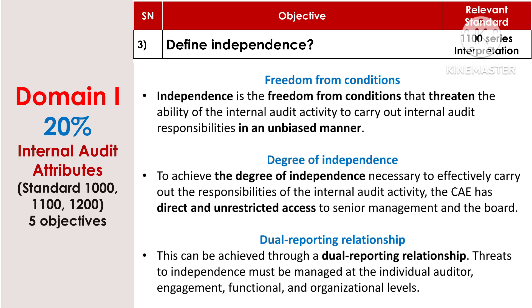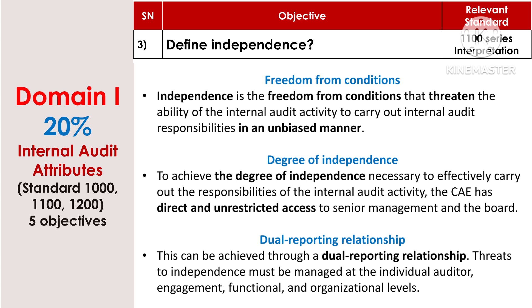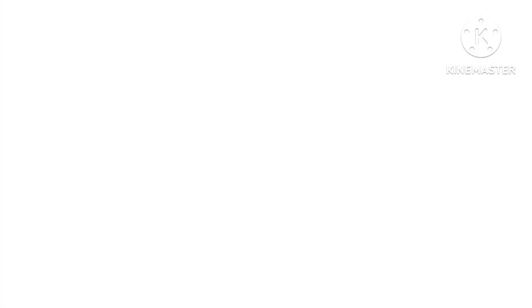What is independence? Independence is freedom from conditions that threaten the ability of the internal audit activity to carry out its responsibilities in an unbiased manner. To achieve the necessary degree of independence, the CAE must have direct and unrestricted access to senior management and the board — achievable through a dual reporting relationship. Threats to independence must be managed at the individual auditor, engagement, functional, and organizational levels.